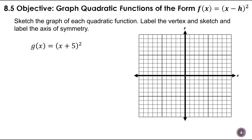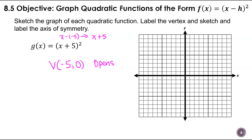I think we can do one more question here. This makes a vertex at (-5, 0). This is sometimes confusing — remember, if it was x minus negative five, we would write that as x plus five, and so that's how I know that is a negative. This one does open up. My axis of symmetry is at x equals negative five, because it has to go through the vertex.